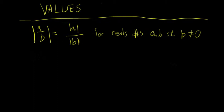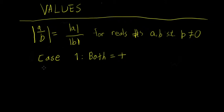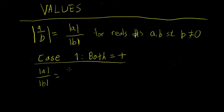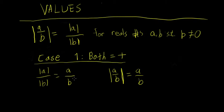Case 1: both are positive. We'll evaluate both sides of this equation and show they're equal. The absolute value of A over B — if they're both positive, the absolute value of A is just equal to A itself, and the absolute value of B is just equal to B itself. Now looking at the absolute value of A over B: if they're both positive, A over B is going to be positive, and the absolute value of a positive number is the number itself. So these two expressions are equivalent when both A and B are positive.